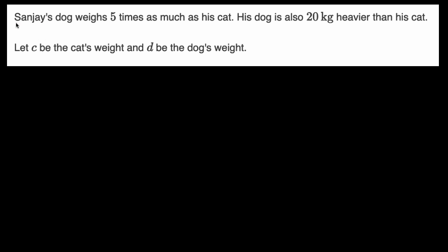So this first one tells us, Sanjay's dog weighs five times as much as his cat. So how much does his dog weigh? So his dog weighs d, so we know d is going to be equal to five times as much as his cat weighs. So his cat weighs c, so d is going to be equal to five times as much as his cat weighs. So that's one linear equation using d and c.